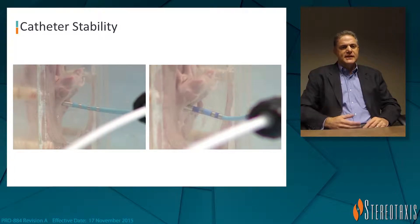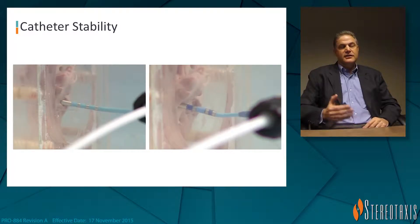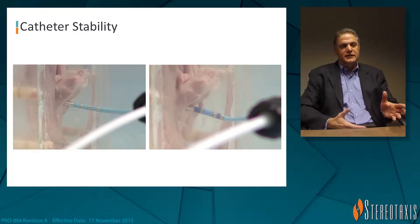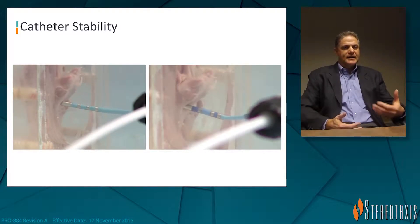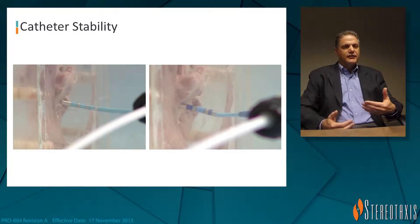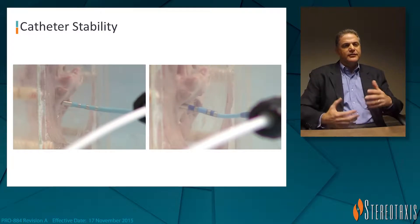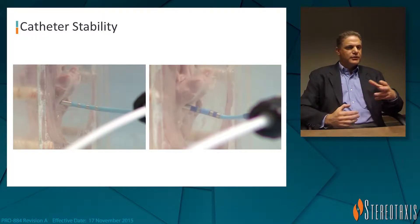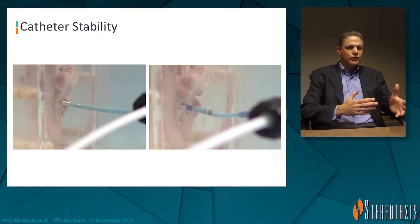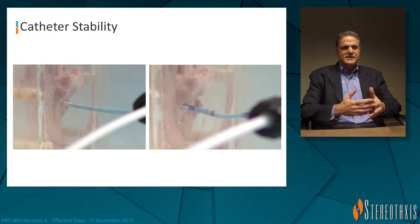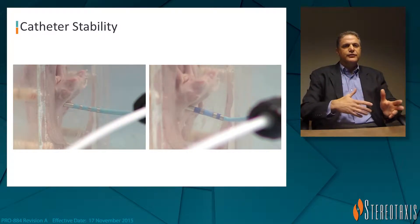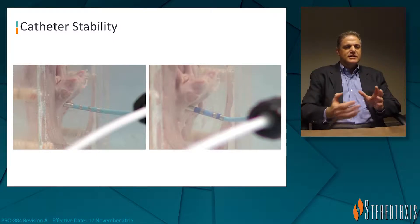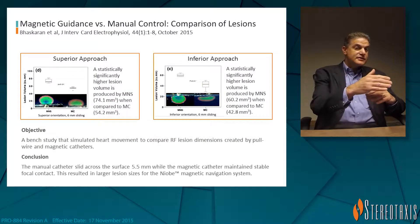The advantage of the RMT is that you'll have continuous catheter contact because the catheter is being pulled against the tissue by the magnetic field, and the flexibility of the structure itself allows the catheter to move with the tissue. So with the tissue contacting, moving with the patient themselves breathing and moving, the catheter is free to flex and move and still maintain its continuous contact.